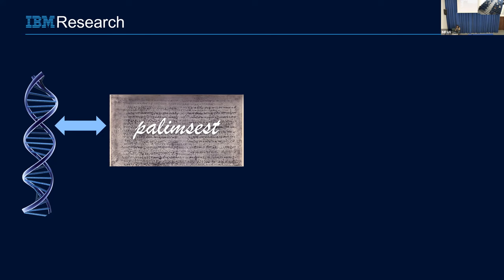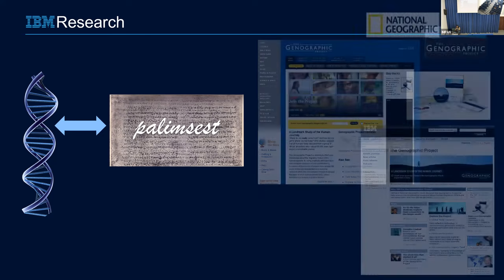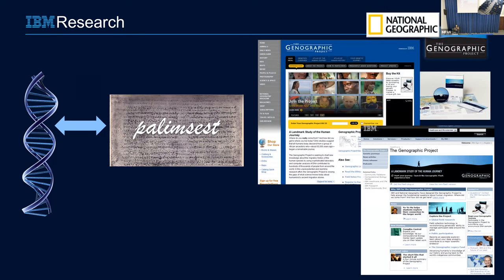That was the basis for a project that IBM was involved in — the Genographic Project. We teamed up with National Geographic and with PIs from around the globe. In one sentence, the mission of the project was to say: how did humans — there is common agreement that we as a species emerged in Africa — how did we populate the world? What were the routes that we were taking? And this is based on genomic data.